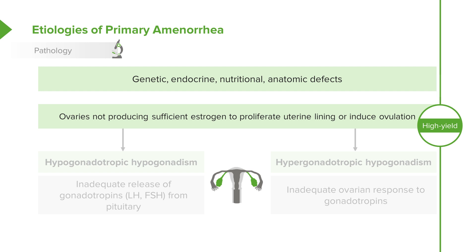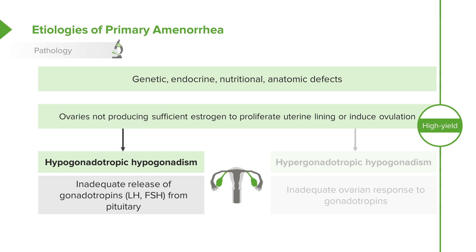The etiology of primary amenorrhea is rooted in the fact that the ovaries are not producing sufficient estrogen to proliferate uterine lining or induce ovulation. This can be due to two major causes: either patients have hypogonadotropic hypogonadism, which is an inadequate release of gonadotropins LH and FSH from the pituitary resulting in a lack of ovarian response, or they have hypergonadotropic hypogonadism, where there are lots of FSH and LH but an inadequate ovarian response.